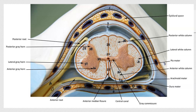We can also see yellow structures called roots — posterior root and anterior root. Those two roots come together forming the spinal nerve. That's the beginning of the spinal nerve, and the spinal nerve then innervates all your body structures, including your muscles, your skin, and also some internal structures of your body like your internal organs.